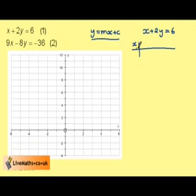So we only need two points to draw this line. If we take x is 0, we get 2y equals 6, which means that y is 3, and if we were to take y equal to 0, we'd be left with x equals 6.